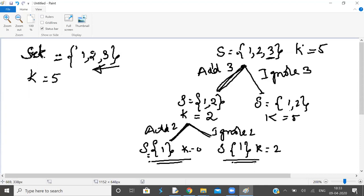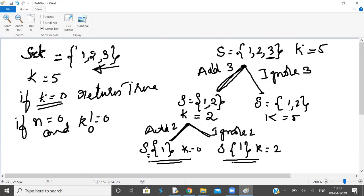You can further branch the tree, but there must be one exit condition, otherwise you'll go to infinite levels. The exit condition is: if k equals zero, then return true. If n equals zero and k not equal to zero, return false.